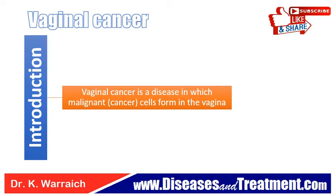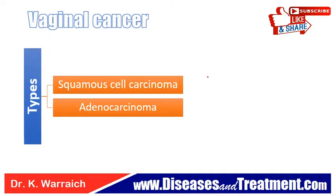There are two main types of vaginal cancers. The first is squamous cell carcinoma, which is cancer that forms in the squamous cells — the thin, flat cells lining the vagina. Squamous cell vaginal cancer spreads slowly and usually stays near the vagina, but may spread to the lungs and liver as well. It is the most common type and is found most often in women aged 60 or over.